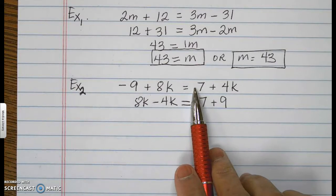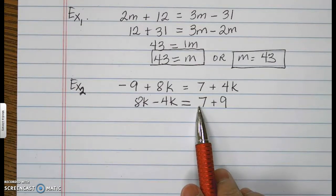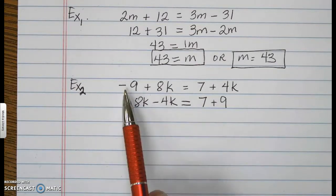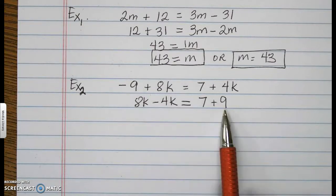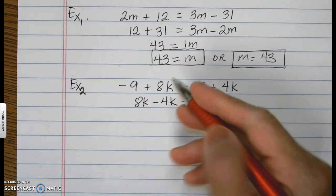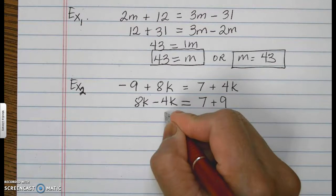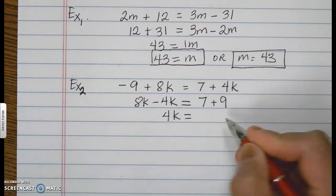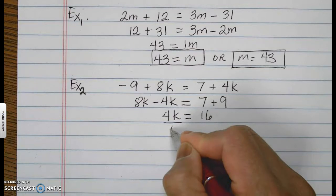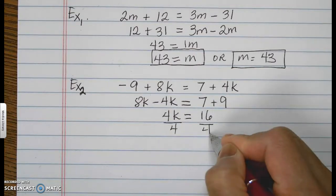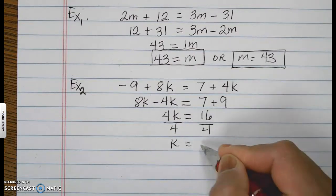I will have a positive 8K minus 4K will now equal 7 plus 9. The sign of 7 stays the same as positive because we did not move it to the other side, and the negative 9 now turns to a positive 9, making this equal to 4K and this to 16. And that you will have to divide by 4. And now your K is 4.